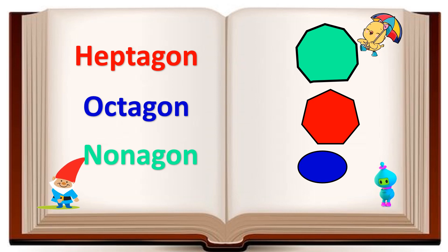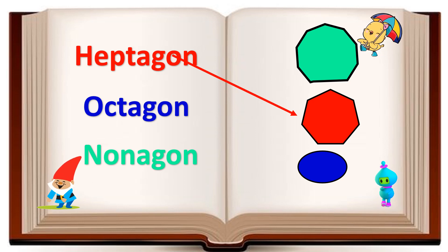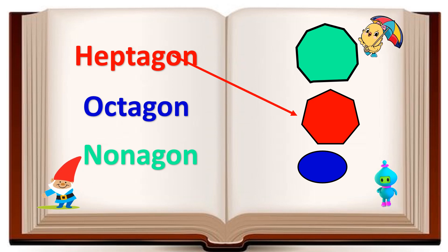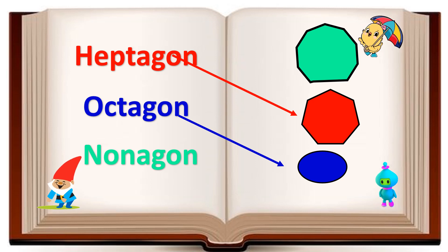Let's match the spelling of heptagon with its correct picture. Yay, good job! Now we will match the spelling of octagon with its correct picture. Fantastic!